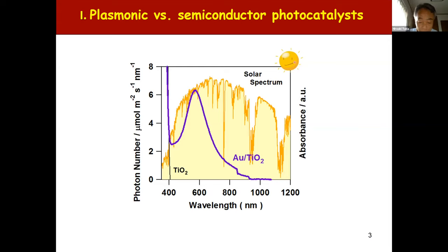Let me compare the optical properties of the typical semiconductor photocatalyst, TiO2, and plasmonic photocatalyst, Au/TiO2. TiO2 hardly absorbs visible light. On the other hand, loading gold nanoparticles induces strong and broad absorption around 600 nanometers due to the localized surface plasmon resonance, LSPR.